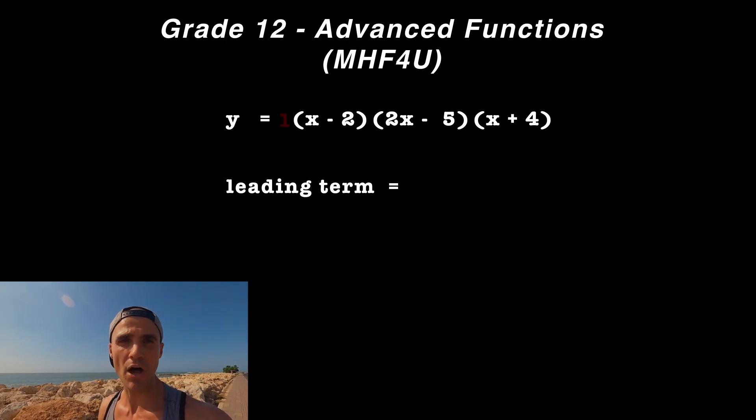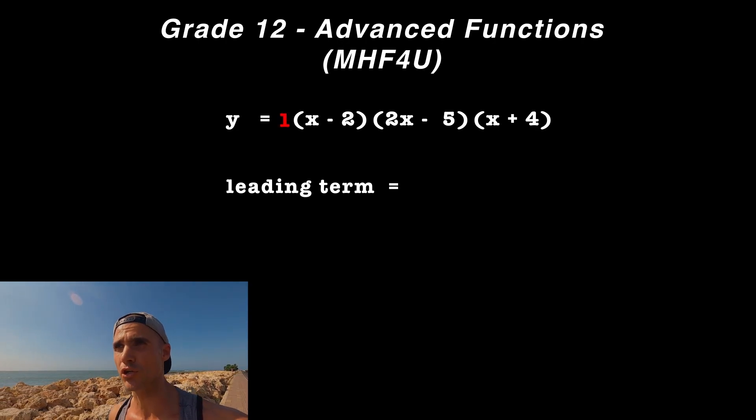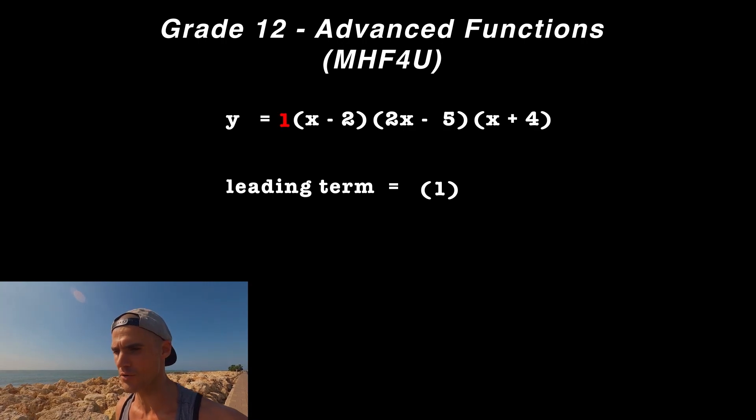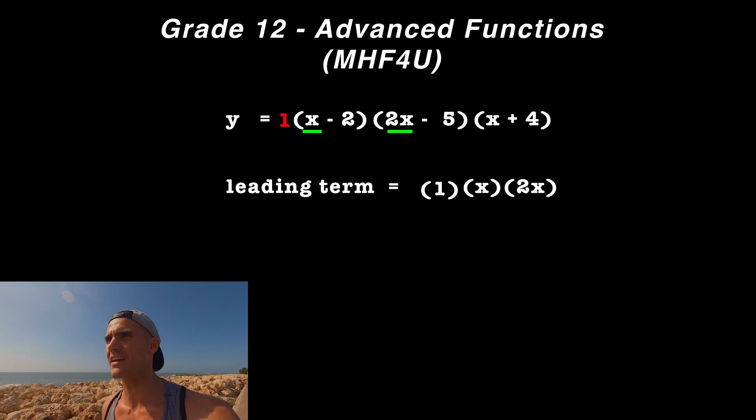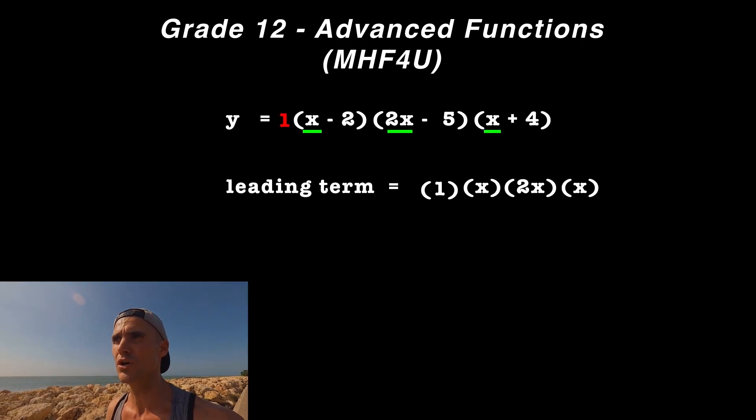In this case, there's a positive one in front, which we include when finding the leading term. Then we have x, 2x, and x. Multiplying all those gives 2x³.